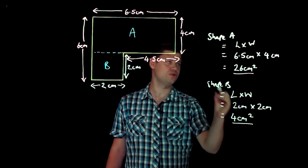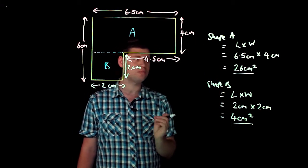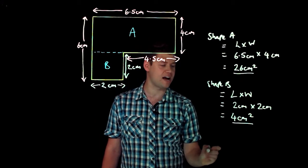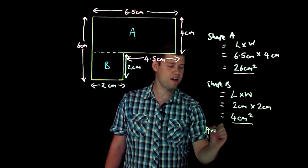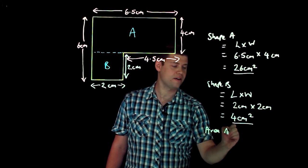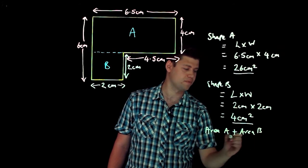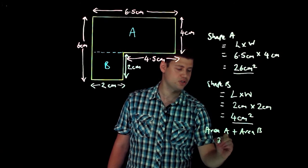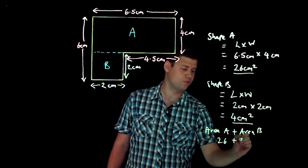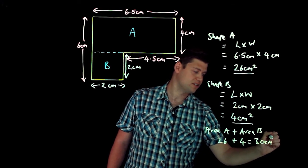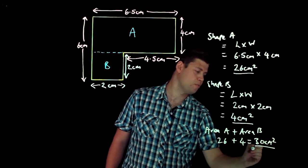So those are my two different shapes. One thing we must remember to do is we must remember not to just finish at that point. We need to add the area of A and area of B together. And so in this situation that would be 26 plus 4 giving me 30 centimeters squared. And that would be my answer.